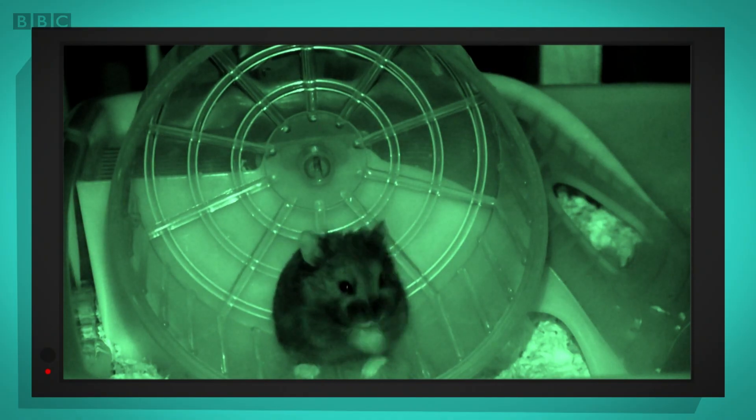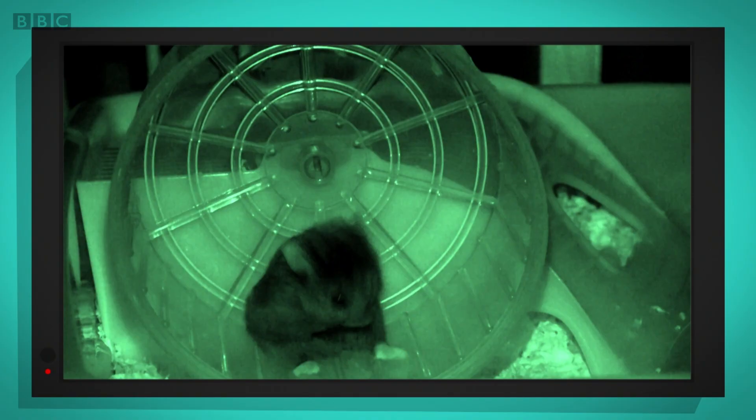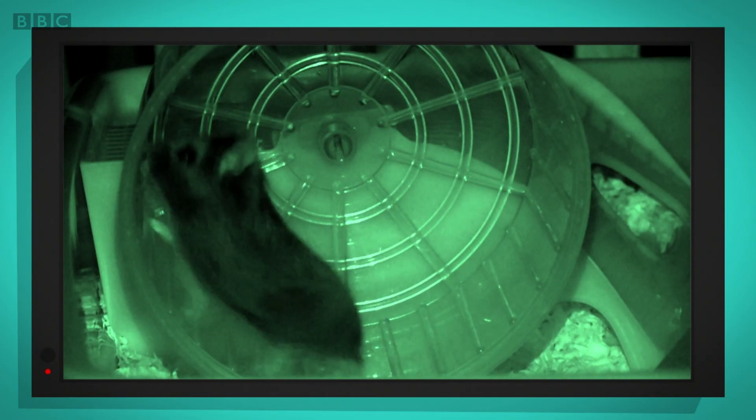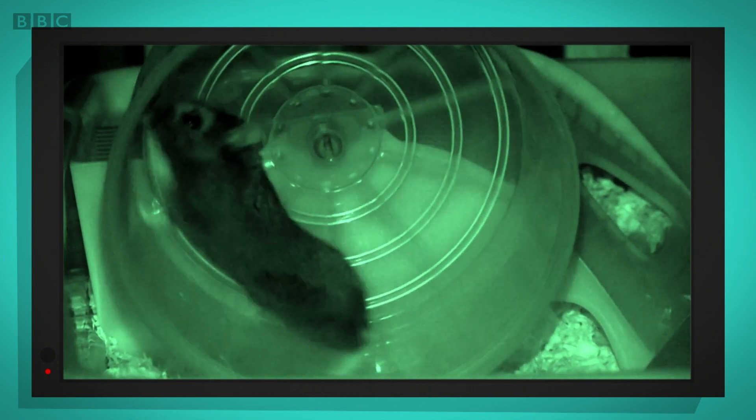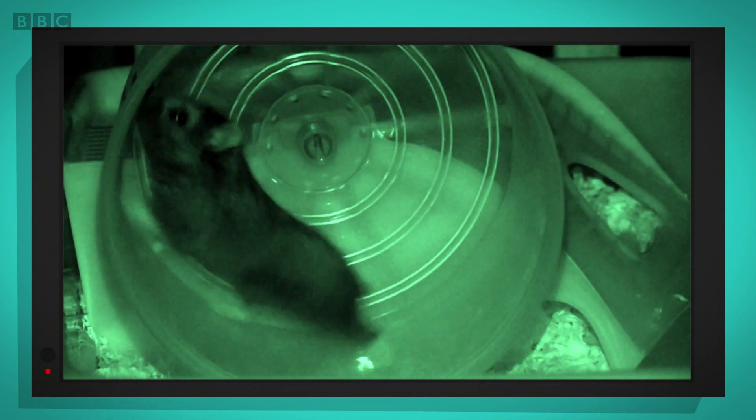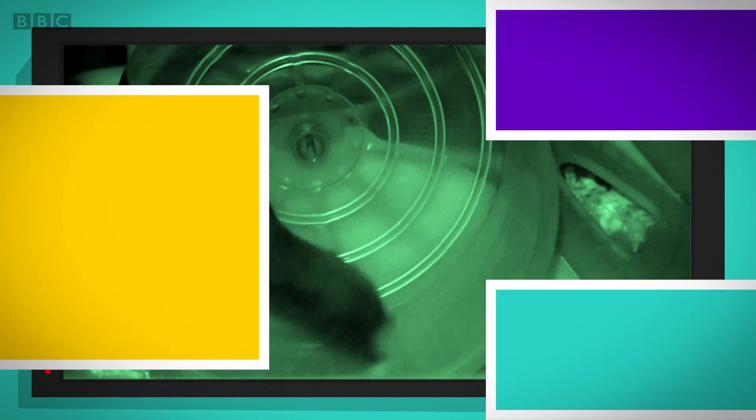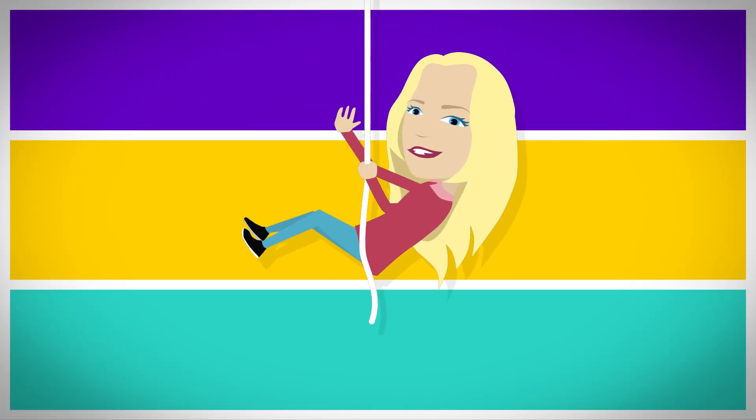Let's see Herbert in action again, but this time in slow motion. You can see how Herbert's paws grip onto the ridges inside the wheel. As his legs push down, they push the wheel round behind him.